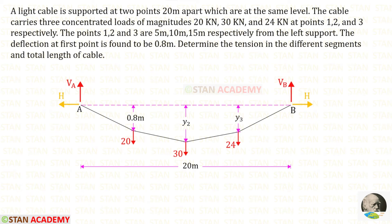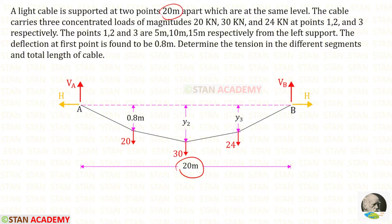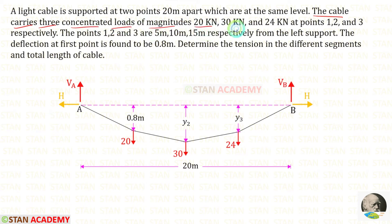Hello everyone. Today we are going to do a problem based on suspension cables. Let us read the question and draw the diagram. A light cable is supported at two points 20 meters apart which are at the same level. The span of the cable is given as 20 meters. The cable carries three concentrated loads of magnitudes 20 kN, 30 kN and 24 kN at points 1, 2 and 3 respectively.